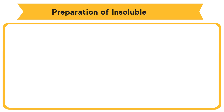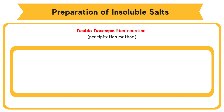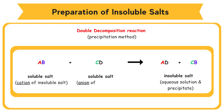Preparation of insoluble salts. Insoluble salts are prepared by double decomposition reaction — precipitation method. In the double decomposition reaction, two different soluble salt solutions are mixed to produce an insoluble salt. The ions in both aqueous solutions exchange with each other to form a new aqueous solution and a precipitate. AB + CD → AD + CB. Solution A is from a soluble salt containing the cation of the insoluble salt. Solution B is from a soluble salt containing the anion of the insoluble salt.